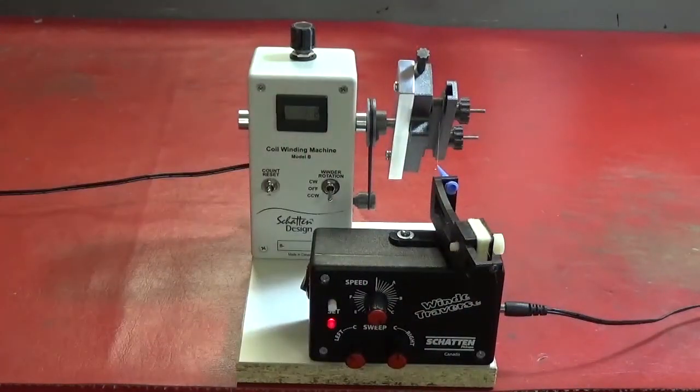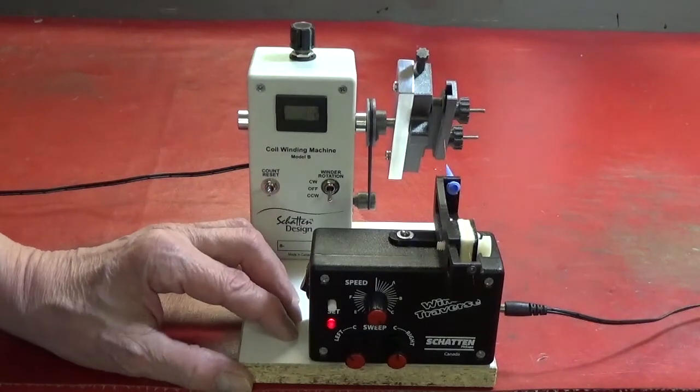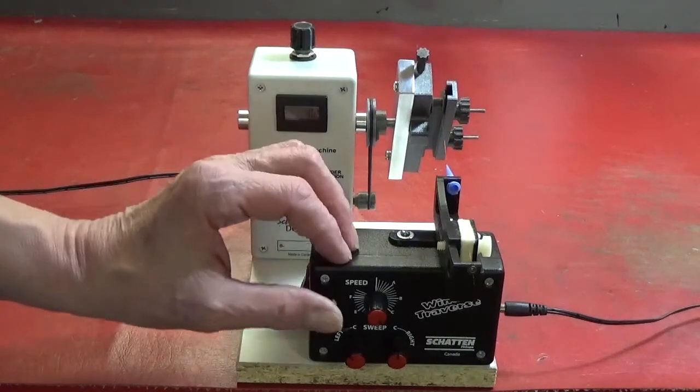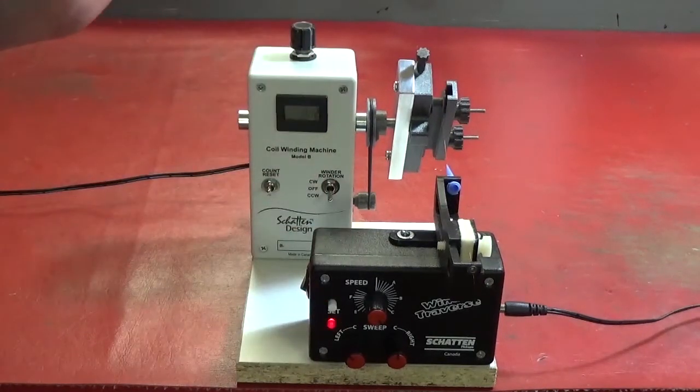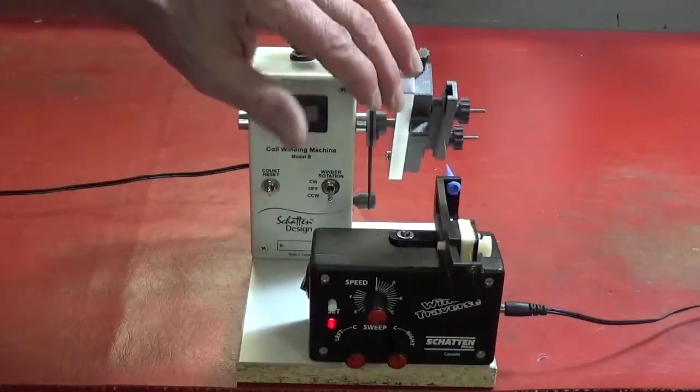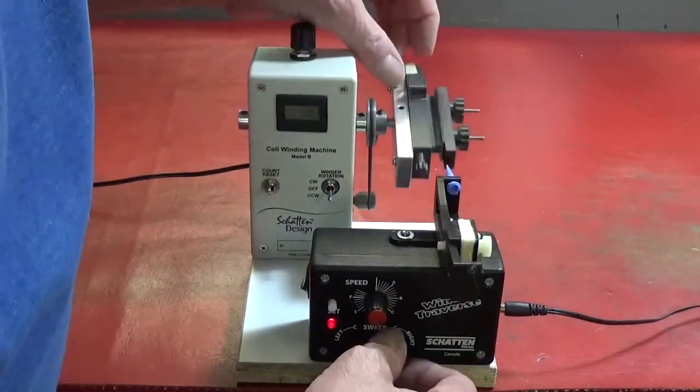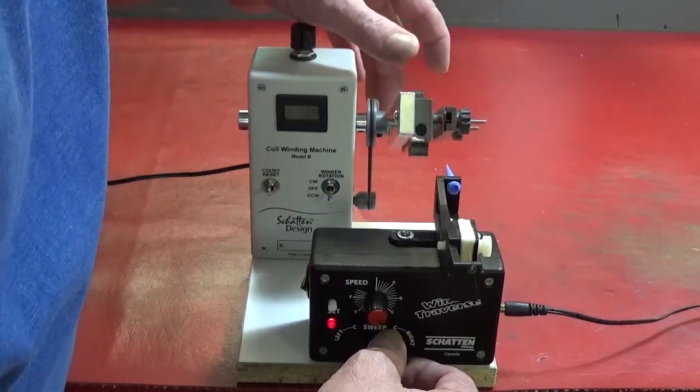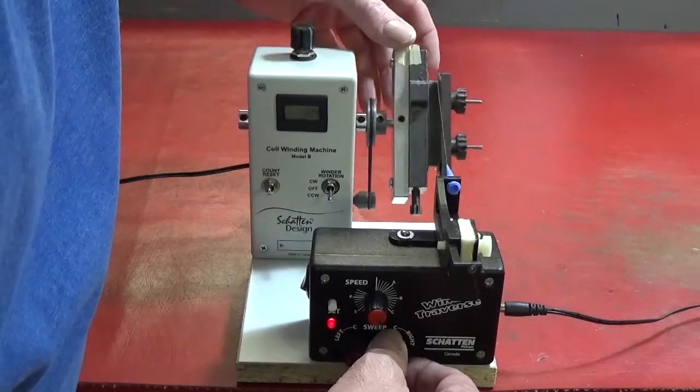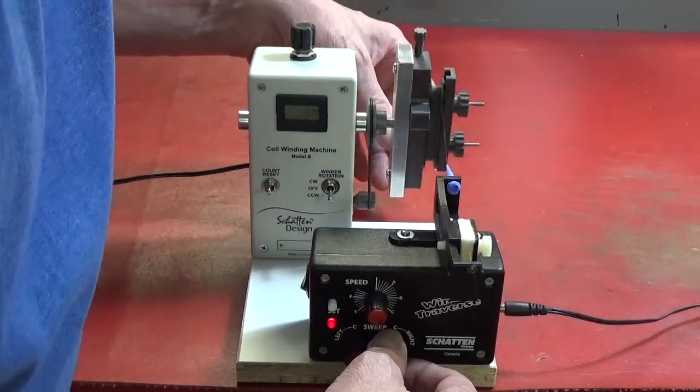I'm going to turn on the machine, it cycles left and right. Press it once, we're going to set the right limit and we'll adjust that until it's just inside the bobbin edge. That looks good.